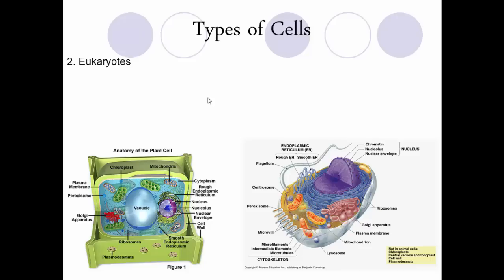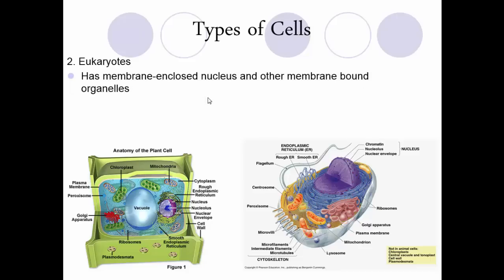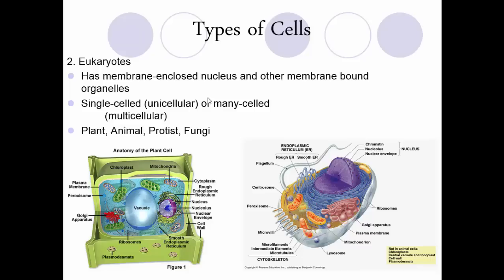Eukaryotes — 'eu' means true, 'karyote' for nucleus — have a true membrane-enclosed nucleus and other membrane-bound organelles. They're much more organized and efficient, because every organelle is divided by a membrane and has a specific job. Eukaryotes can be single-celled, like some parasites or fungi such as yeast, or multicellular like humans. Eukaryotes include plants, animals, protists, and fungi — all organisms with a true nucleus and membrane-bound organelles.